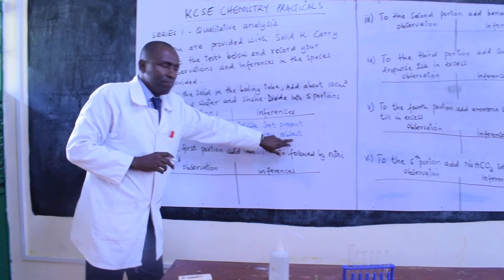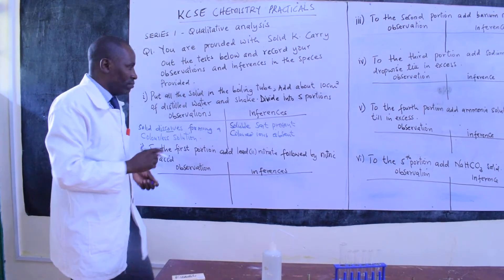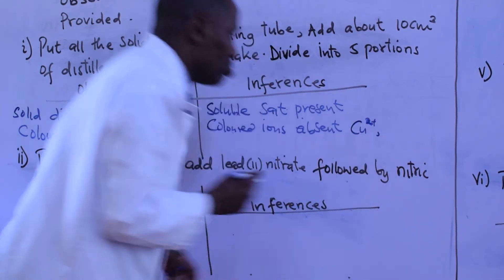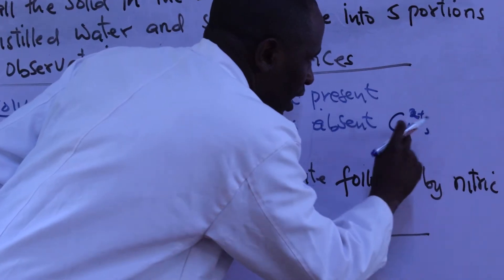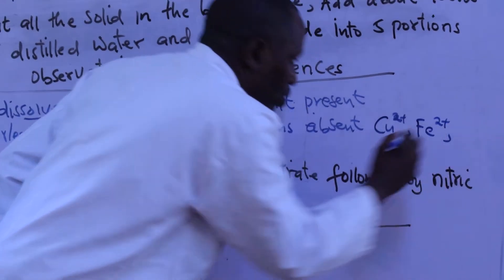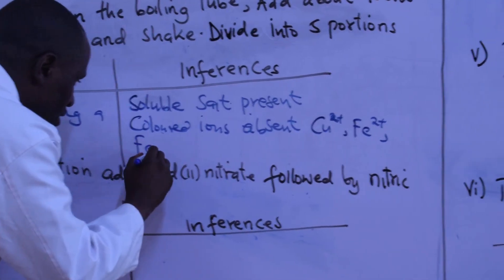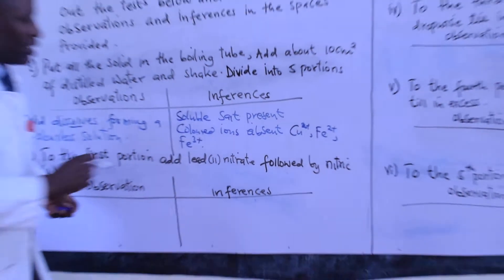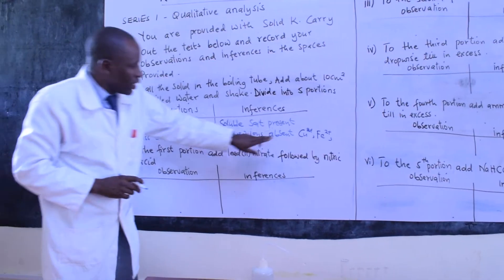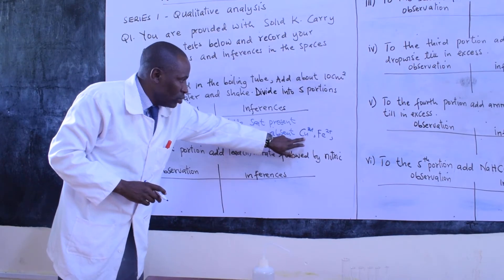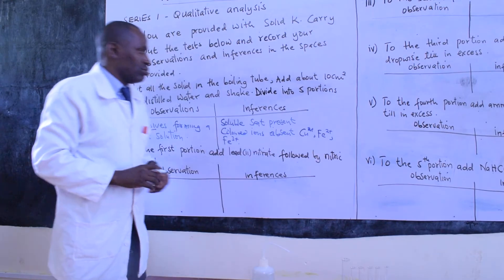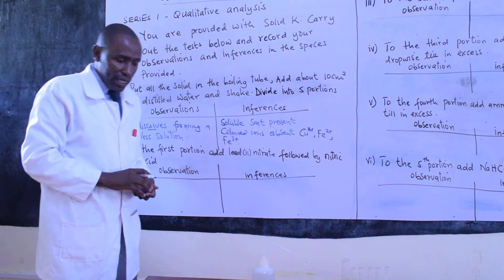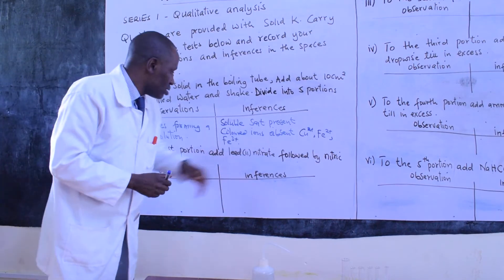You have to mention which specific colored ions are absent. We have copper ions Cu²⁺, we have iron Fe²⁺, and we have iron Fe³⁺. These are actually absent. Copper ions give a blue solution, iron(II) ions give a pale green solution, and iron(III) ions give a yellow solution. Therefore, when the solution is colorless, that means those ions are actually absent.